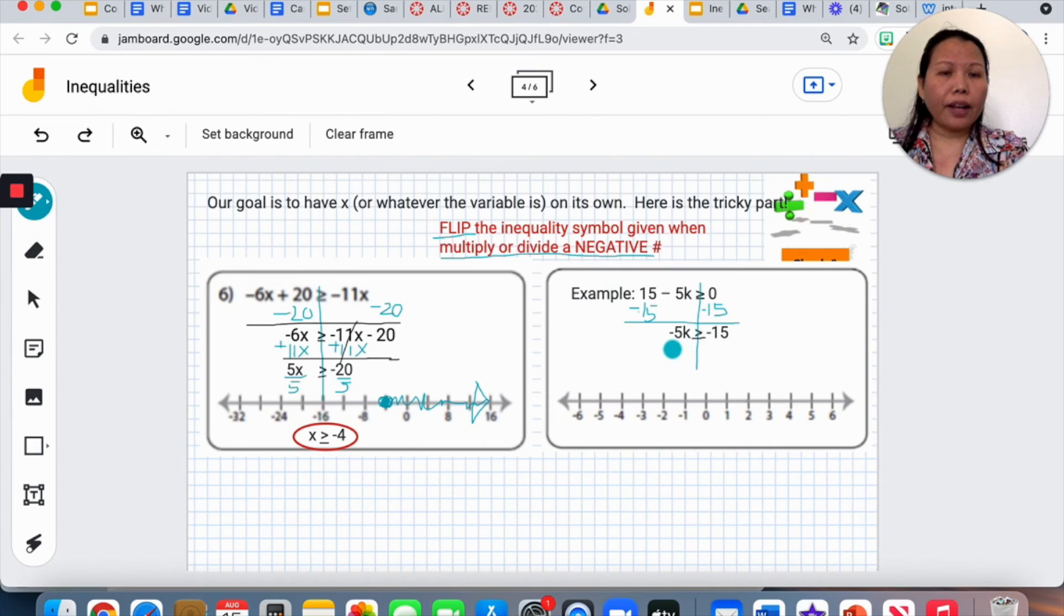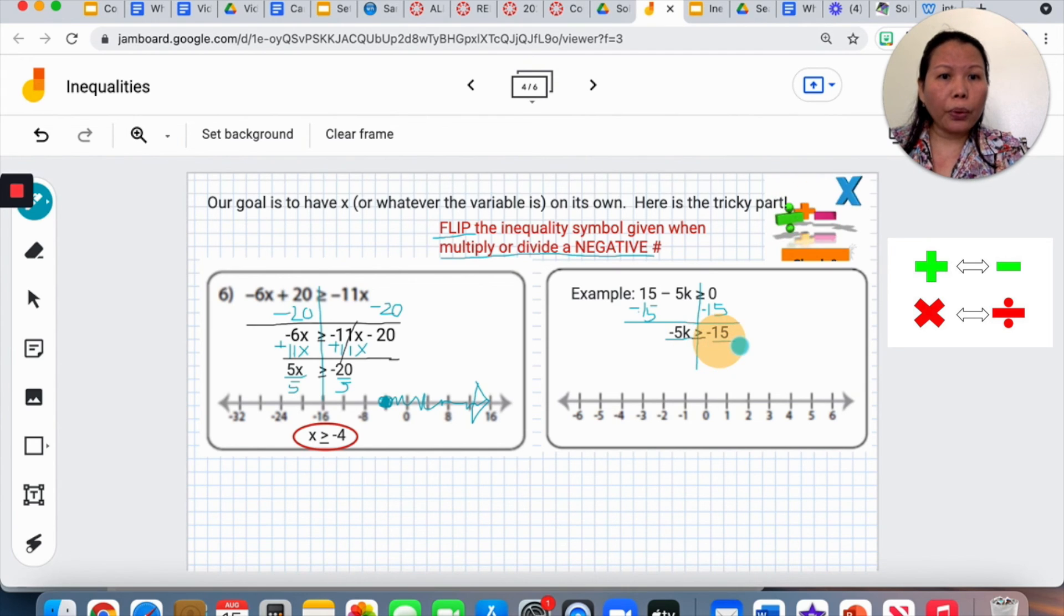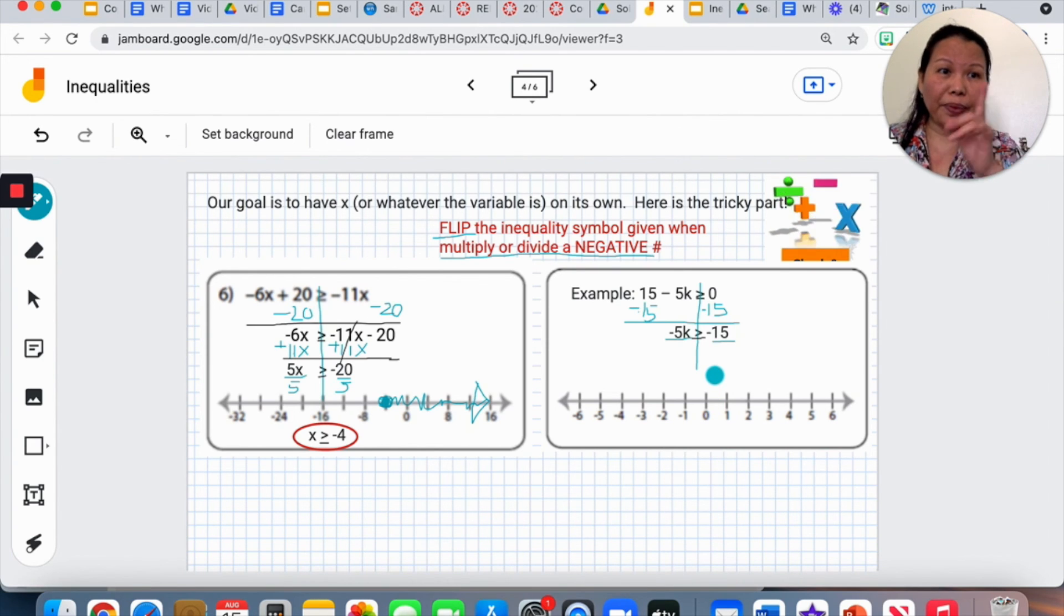I will have negative 5 times K. Remember when there's nothing in between the 5 and the K, it's multiplying. And so we have to do the inverse by dividing negative 5 into both sides. And when we divide a negative number or multiply a negative number, what will happen to the inequality symbol is that it will flip the opposite direction. I'm going to use the exact same symbol. Remember it has a little equal, a dash underneath. It will flip the other way.